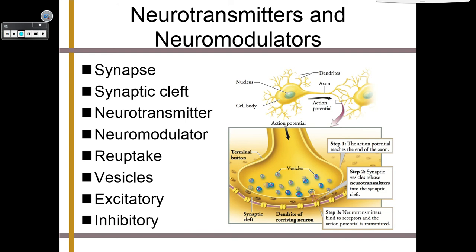What exactly are we sending? We know we are sending electrical energy via action potential, but this is an electrochemical message — the chemicals are neurotransmitters. A neurotransmitter is the chemical part of the neural impulse. Neurotransmitters do all sorts of things. Among neurotransmitters, there are also special neurotransmitters known as neuromodulators. These act like traffic cops, telling certain transmitters that they can go and other transmitters that they have to stay.